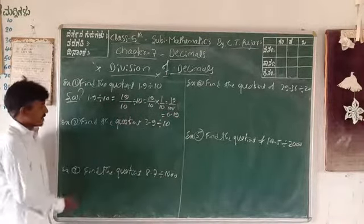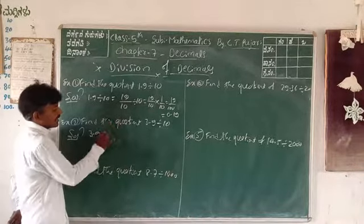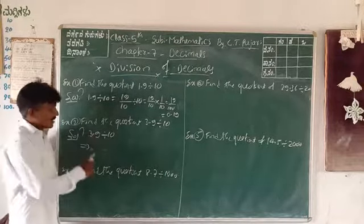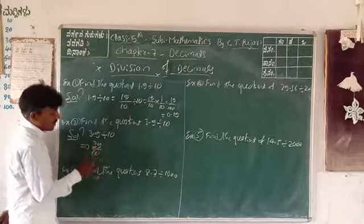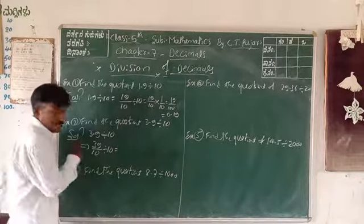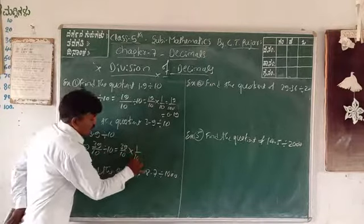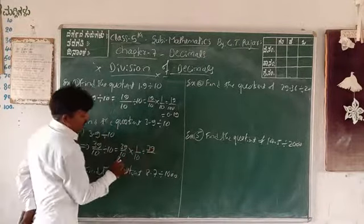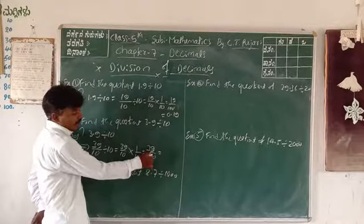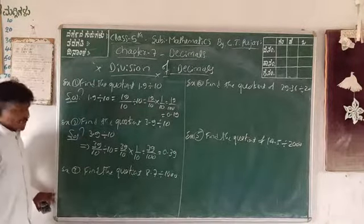Second division: 3.9 ÷ 10. Convert to fraction: 3.9 = 39/10. Then 39/10 ÷ 10 = 39/10 × 1/10 = 39/100. Denominator has two zeros, so answer is 0.39.